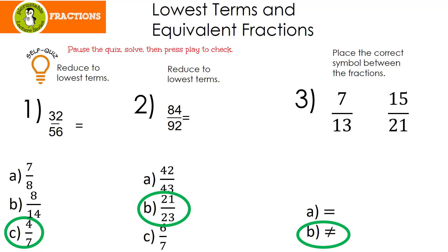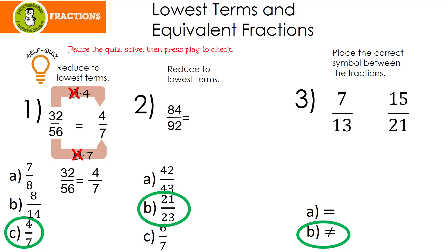Let's look at number 1 again. I know that 8 times 4 is 32, and 8 times 7 is 56. Remember, you could have started dividing by 2, divide by 2, divide by 2, and so on — but you should still get the same answer, 4 over 7. That means that 32 over 56 is equivalent to 4 sevenths.